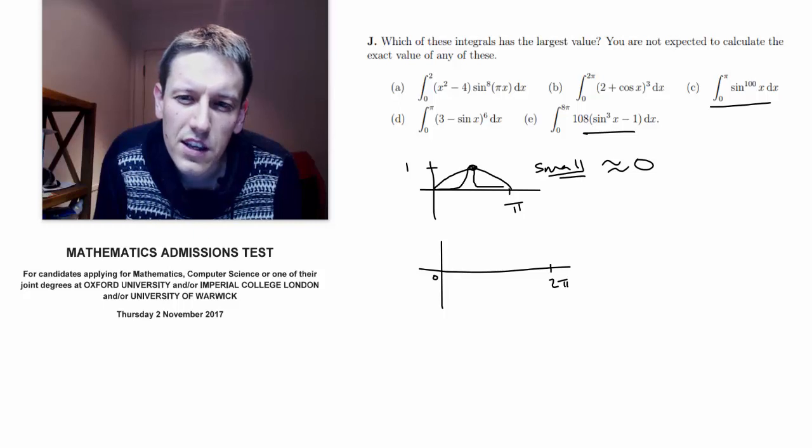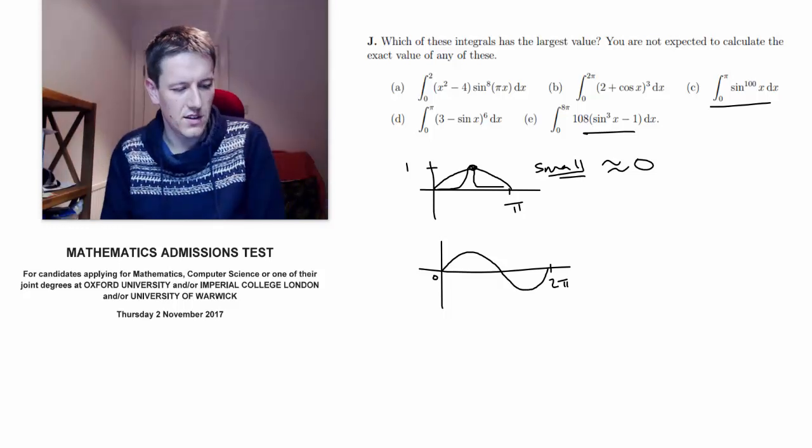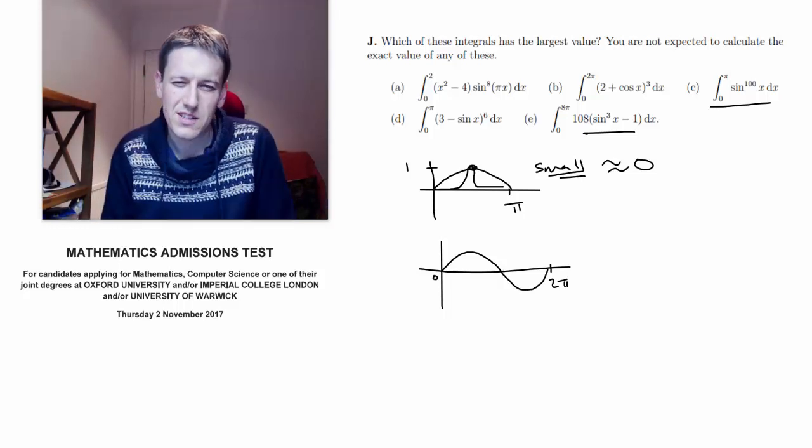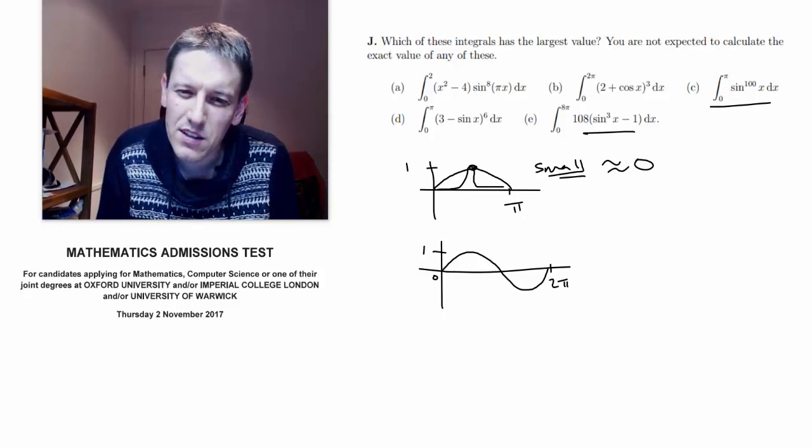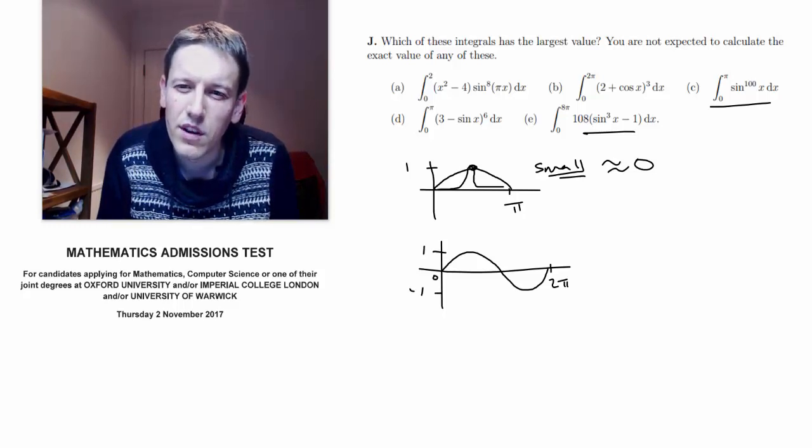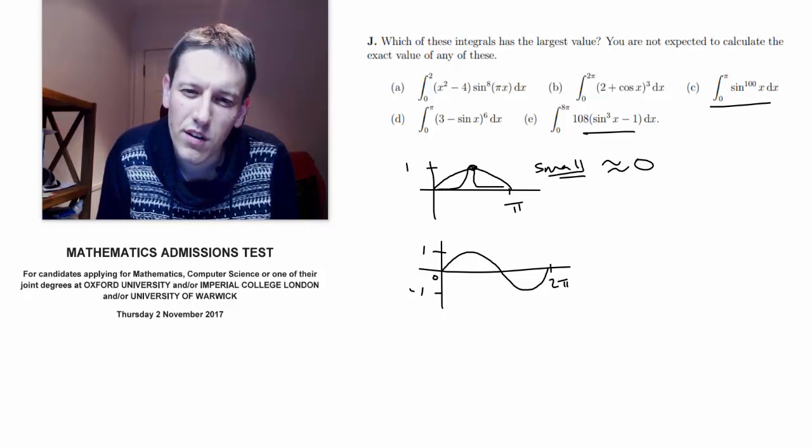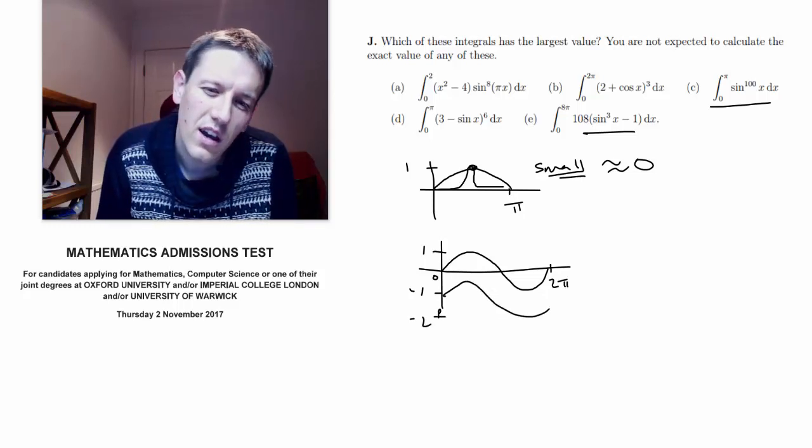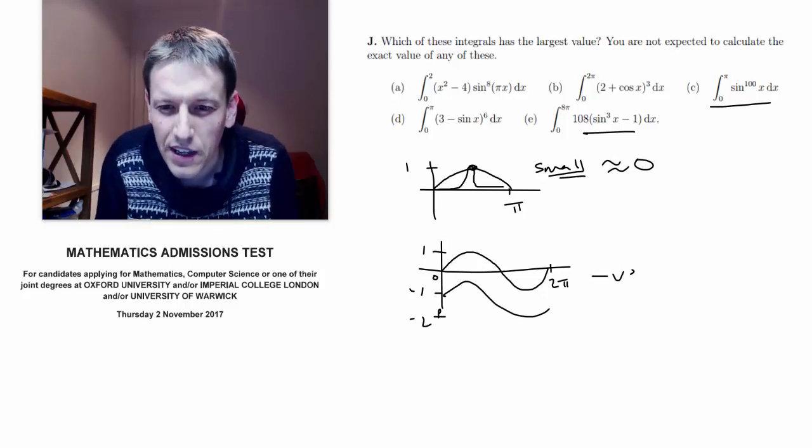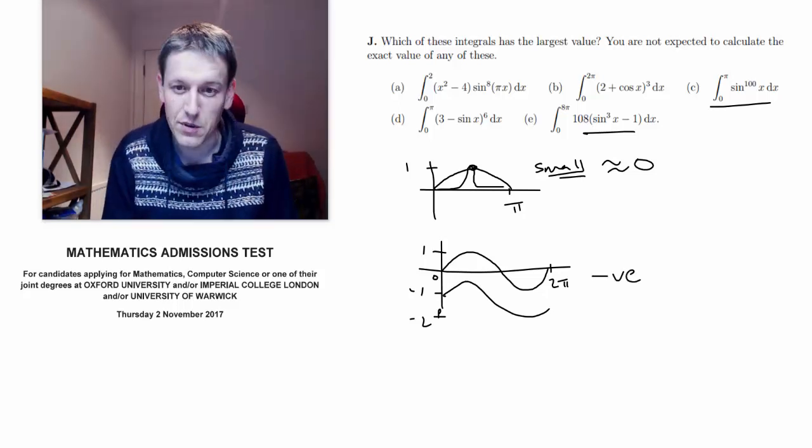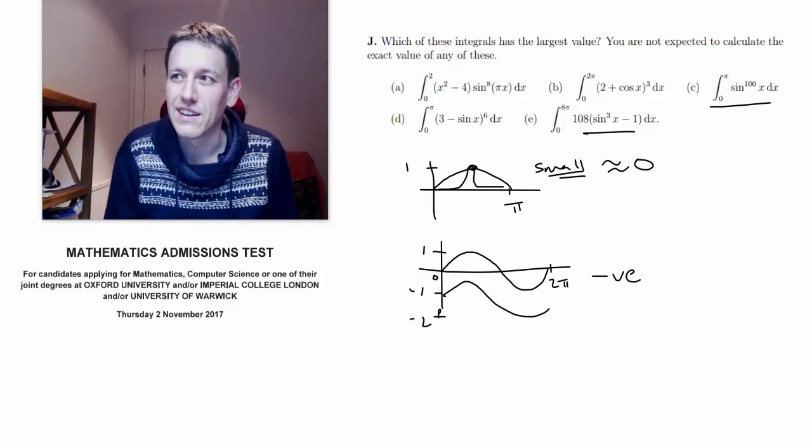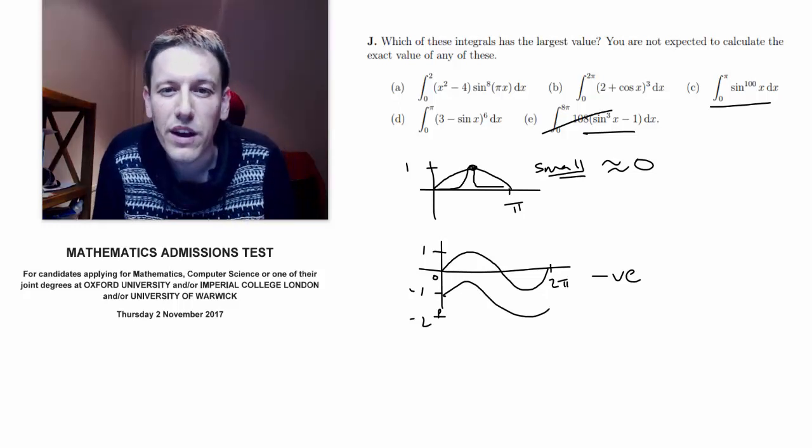So sine cubed x minus 1. So again I've got sine that's going to look like this. But sine cubed is still going to be between minus 1 and 1. So if I do sine cubed minus 1, well it's all going to be contained within the region between 0 and minus 2, whatever it looks like. So in particular it's always going to be negative. So actually that one must be smaller than the total area here. As an integral it's going to be negative, so it's definitely smaller than c. So I can rule that one out.